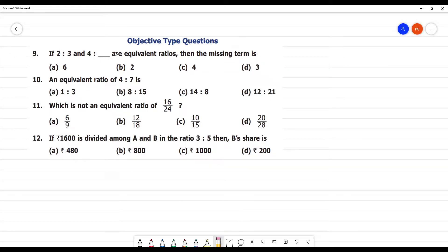If 2 is to 3 and 4 is to blank are equivalent ratios, then the missing term. It is very easy that number 2 into 2. 2 into 2 is 4 and then 3 into 2 is 6. So, answer is C1. Right?